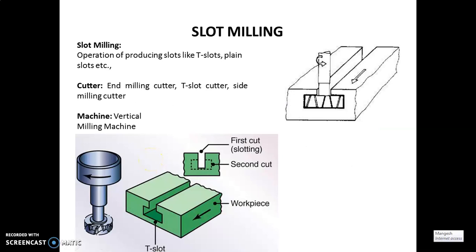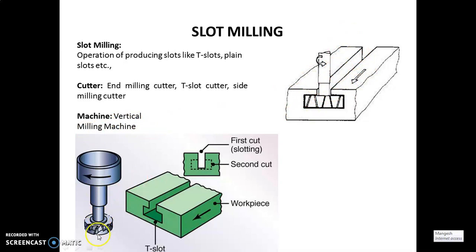Next is the slot milling operation. As represented in this picture, slots are cut in various geometries, and tools are mounted accordingly. The operation produces slots such as teeth slots, plain slots, and many more profiles. Cutters used include end milling cutters, T-slot cutters, and side milling cutters. The machine generally used for slot milling is a vertical milling machine.